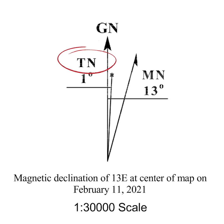You see the letters TN on the arrow. This stands for true north. You can see that the true north is one degree east of grid north on this map.